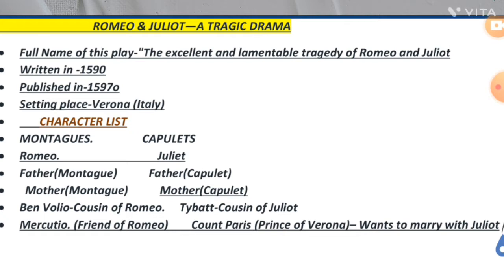These characters are in the Montague family. Now let's go to the story. In Verona's state, there were two famous families who lived there. One was Capulet and the other was Montague. They had two families who fought against each other, and both were famous in Verona's state.